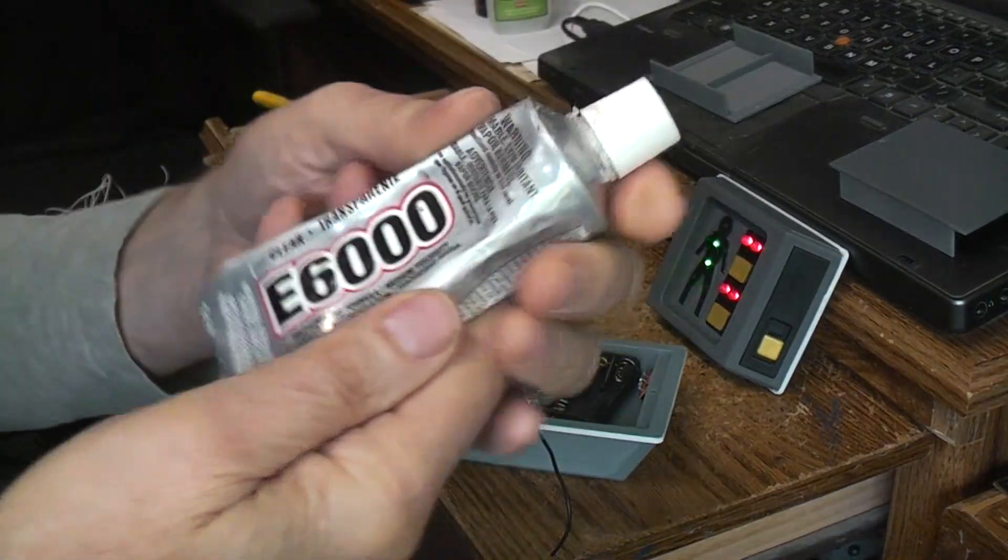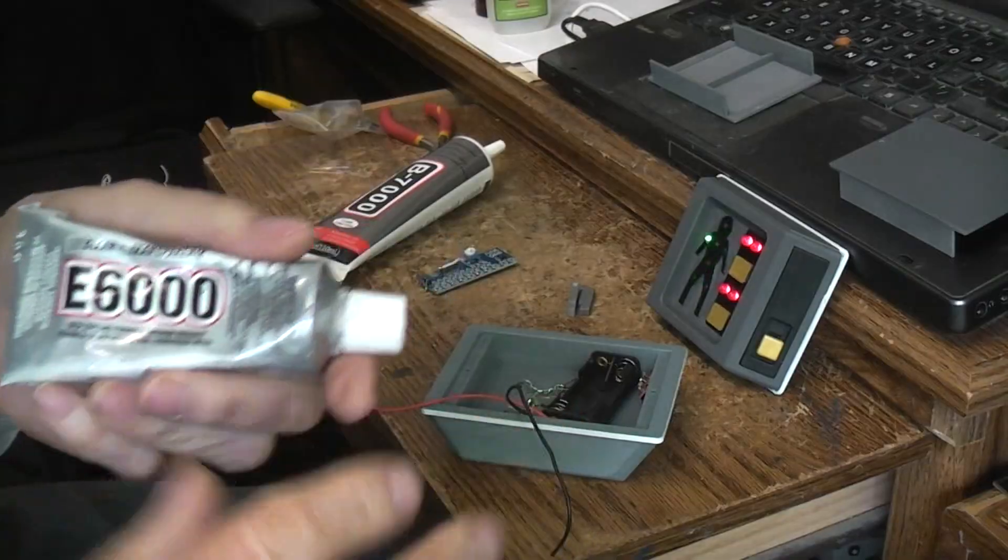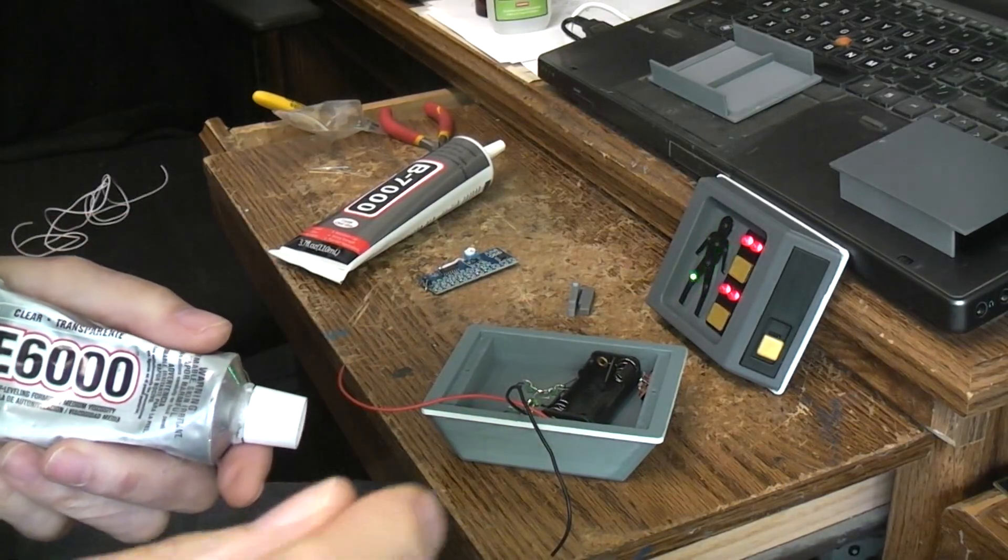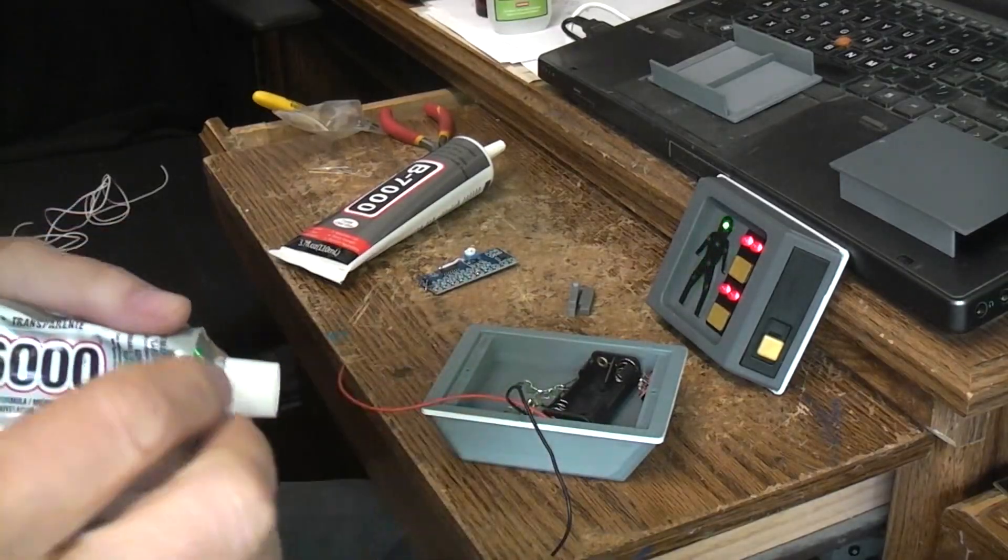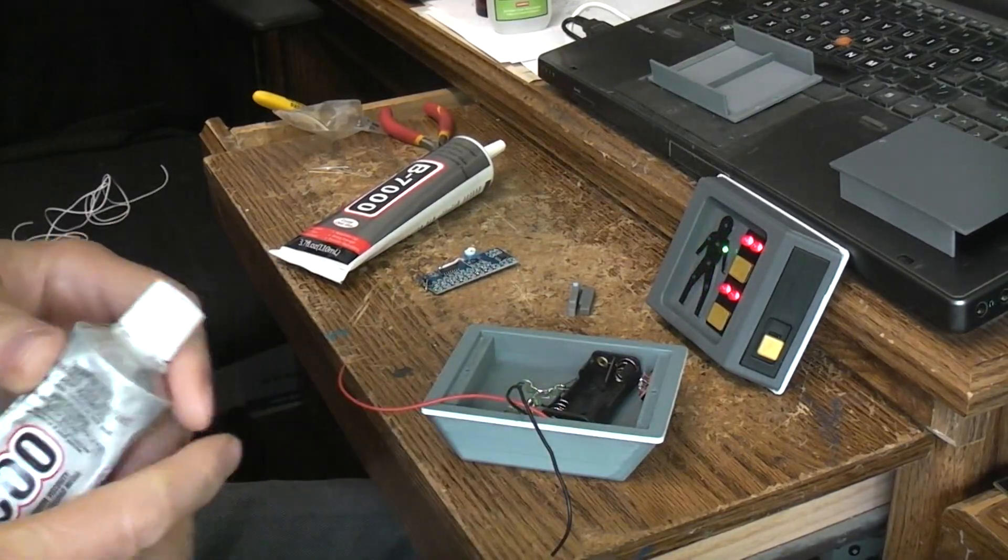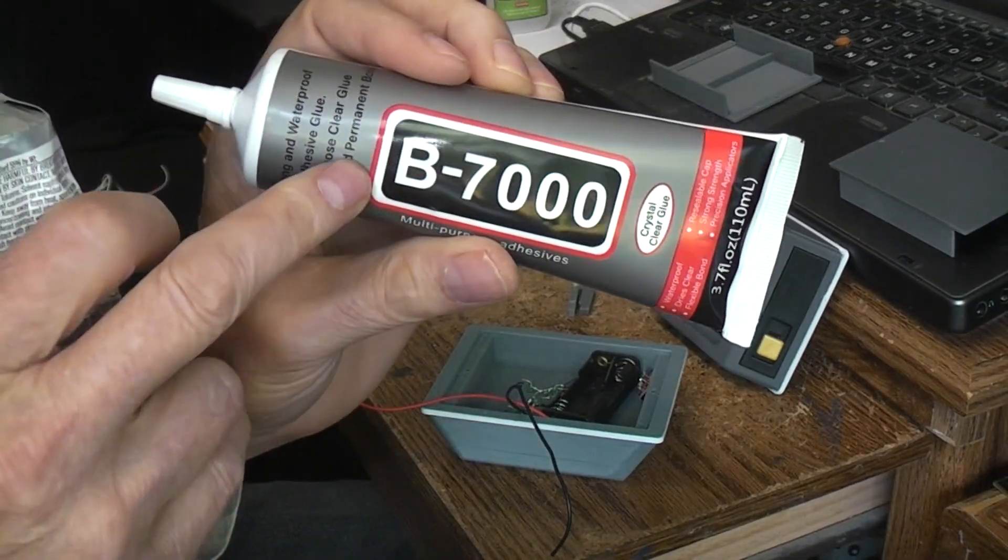If you like the E6000 for joining dissimilar things like plastic to glass or metal to plastic, or 3D printed parts that you might want to be able to pull apart later, the E6000 or the B7000 - got this off Amazon.